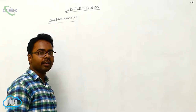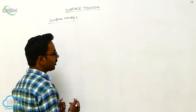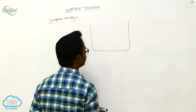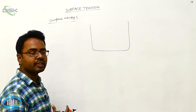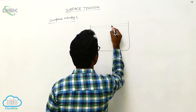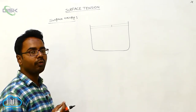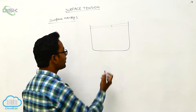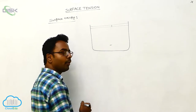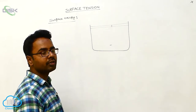Here we discuss surface energy. But before that, let us understand the molecular phenomena in a liquid. Consider a container with some liquid. We define the term 'surface film' as a thin film on the top surface of the liquid whose thickness equals the molecular range. Molecular range is the maximum distance up to which a molecule can attract another molecule. This thin film on the surface whose thickness equals the molecular range is called the surface film.